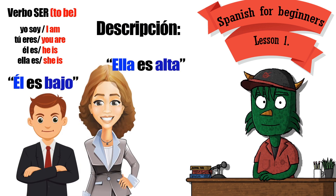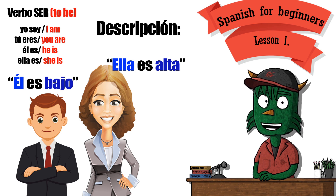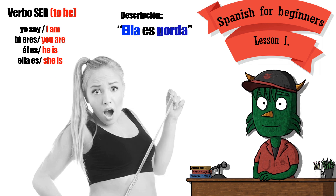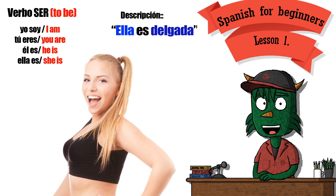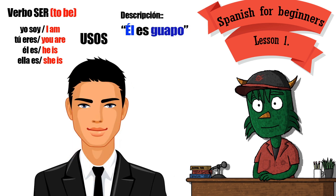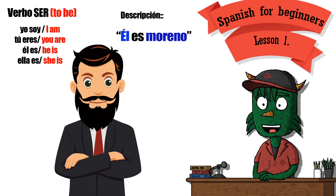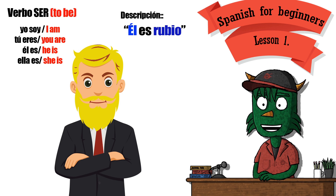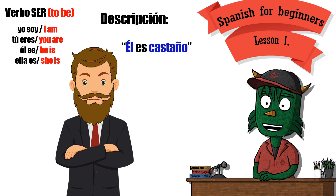Descripción. Él es bajo. Ella es alta. Ella es gorda. Ella es delgada. Ella es guapa. Él es guapo. Él es moreno. Él es rubio. Él es pelirrojo. Él es castaño.